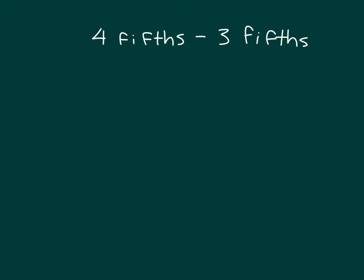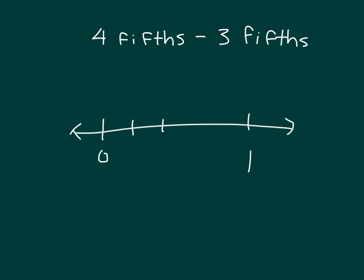Let's work with four-fifths minus three-fifths. Let's use a number line. We'll start with our whole numbers zero and one. And since we're working with fifths, we'll go ahead and divide our number line into fifths, or five parts. Let's label our number line.